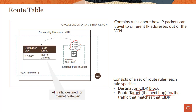Looking at this particular subnet — it's a public subnet, and it can be regional or AD-specific. In this case I'm using a regional public subnet. In the route table, there is an entry which says 0.0.0.0/0, meaning any or all IP addresses. So this is my destination CIDR: packets destined for any IP address need to go to the internet gateway. All traffic destined for the internet gateway is shown here.